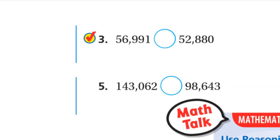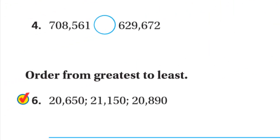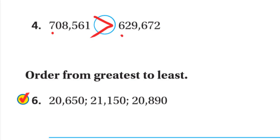Problem four: both numbers have six digits. Start comparing from left to right. Seven versus six — seven is greater than six. Problem five: one number has six digits and the other has five digits. The six-digit number is greater. Don't compare left to right here — you can't compare the nine with the one, because the nine is in the ten-thousands place and the one is in the hundred-thousands place.